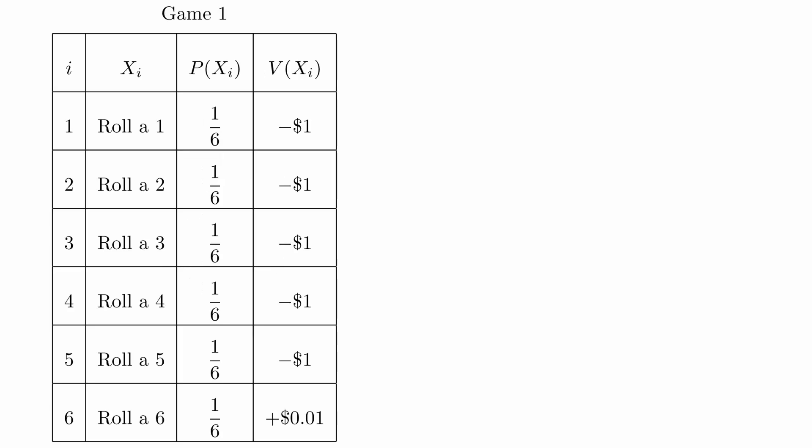For the first game we discussed, there are six outcomes. We will let xi represent the outcome of rolling the number i and put all this information into a chart.